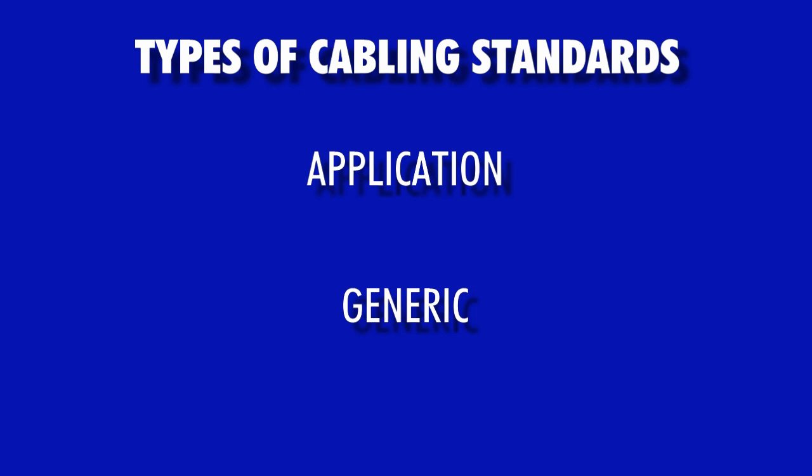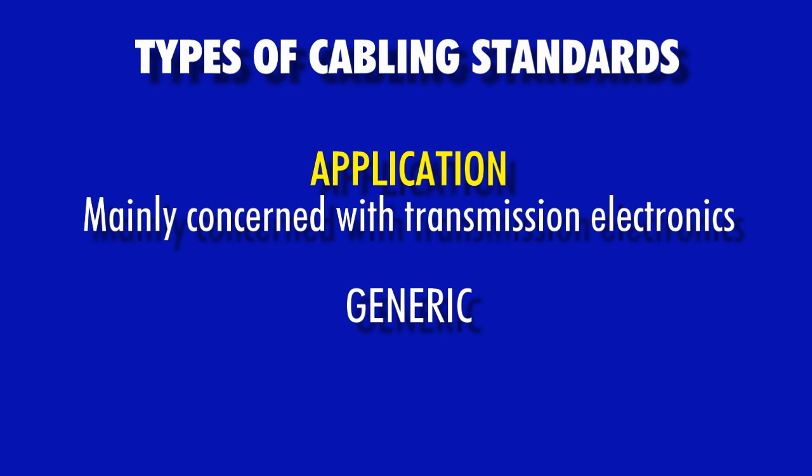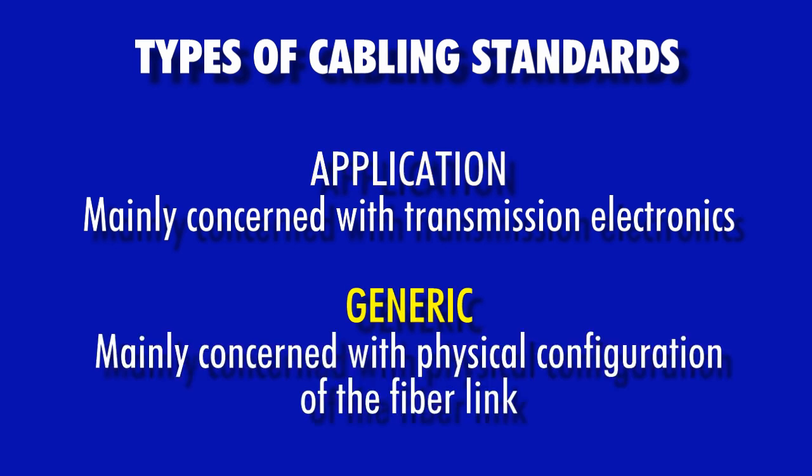Generally speaking, application standards are mainly concerned with the electronics used for transmission, such as network cards, hubs, switches, routers, etc., while generic cabling standards are mainly concerned with the physical configuration of the network — in other words, optical fiber, patch panels, and splices. Let's go into a little more detail about each type of standard.